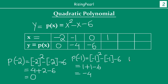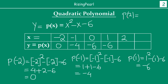At x equals 1, the polynomial gives 1² minus 1 minus 6, which is 1 minus 1 minus 6, equals minus 6. At x equals 2, we get 2² minus 2 minus 6, which is 4 minus 2 minus 6, equals minus 4. At x equals 3, we get 3² minus 3 minus 6, which is 9 minus 3 minus 6, equals 0.